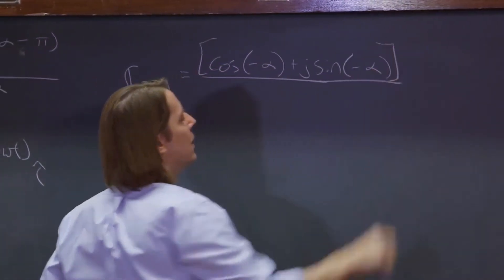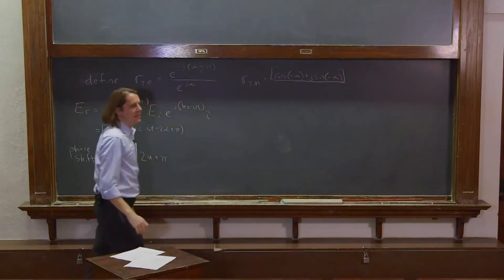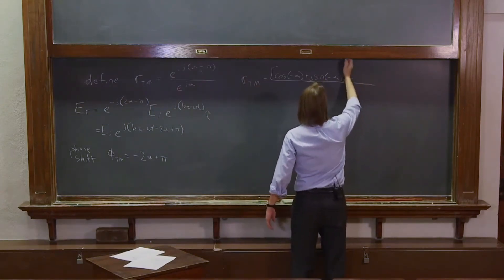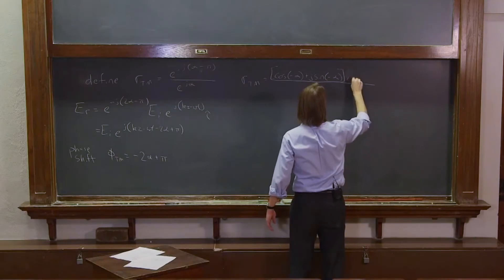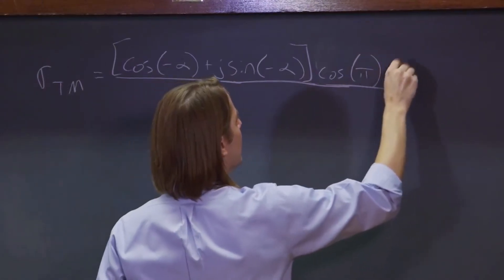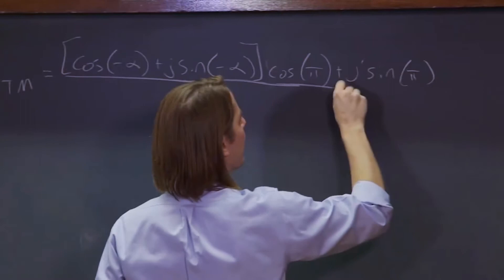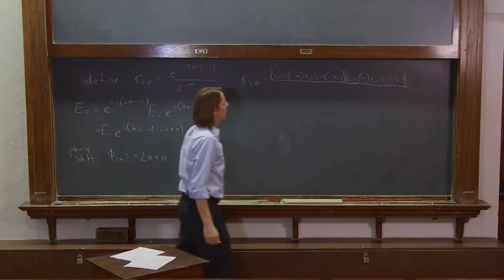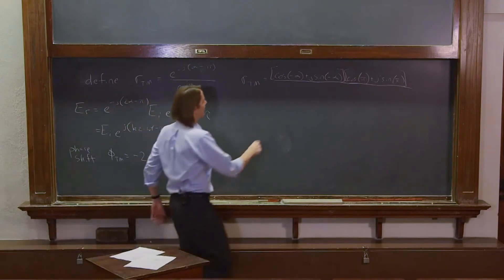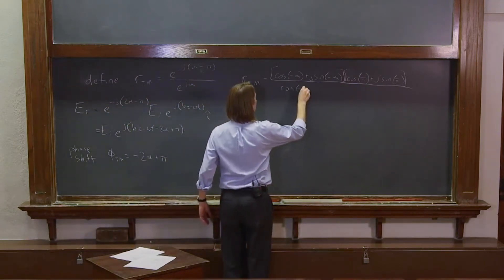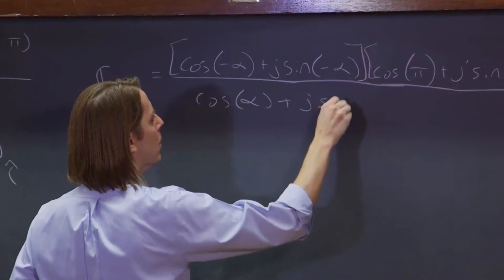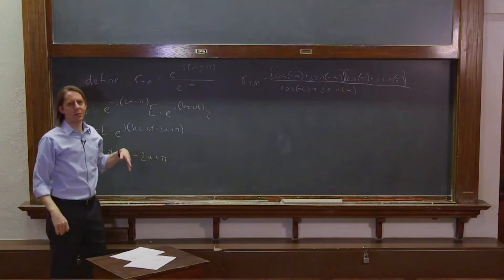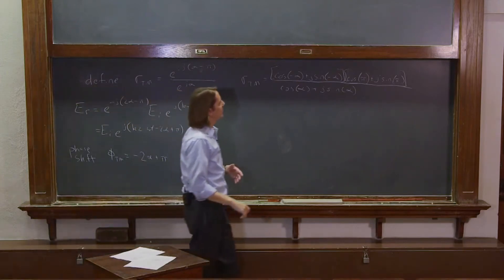And that whole thing times e to the j pi, that whole thing is times the cosine of pi plus j times the sine of pi. All right, and the bottom is just cosine alpha plus j sine alpha. OK, so I chose minus pi for a very specific reason.